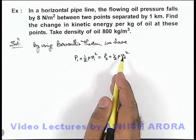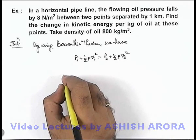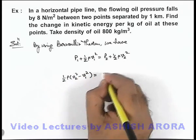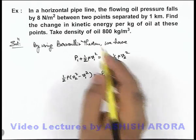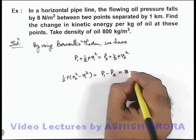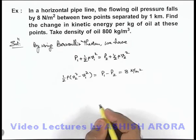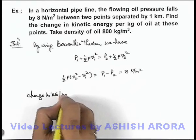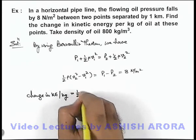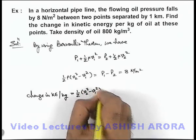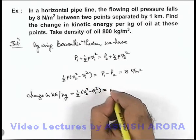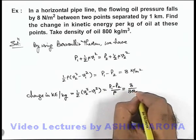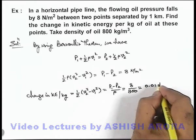In this situation, the change in kinetic energy per unit volume can be written as half rho times (v2 squared minus v1 squared), and this is equal to p1 minus p2. We are given that the pressure difference is 8 newton per meter square. So the change in kinetic energy per kilogram is (v2 squared minus v1 squared) divided by 2, which equals (p1 minus p2) divided by rho — that is 8 divided by 800 — giving 0.01 joule per kilogram.